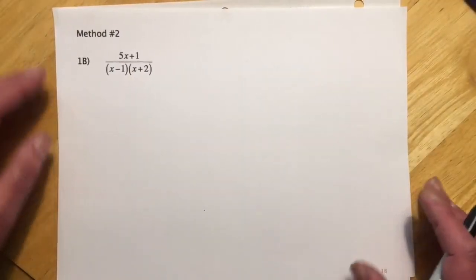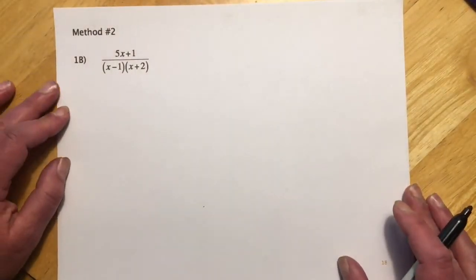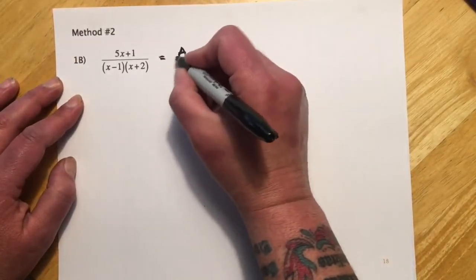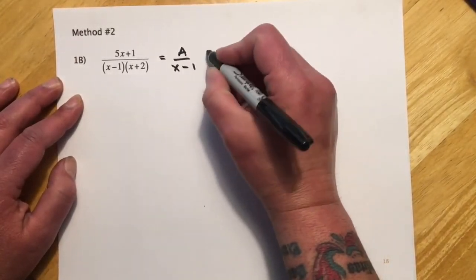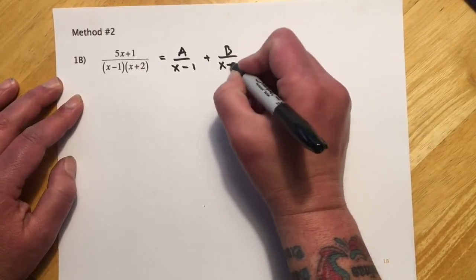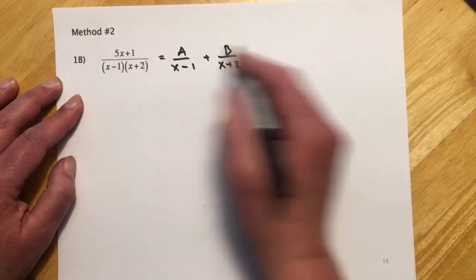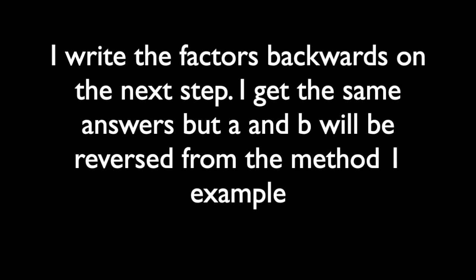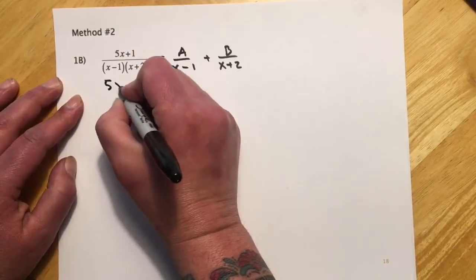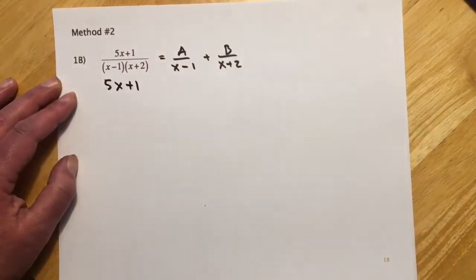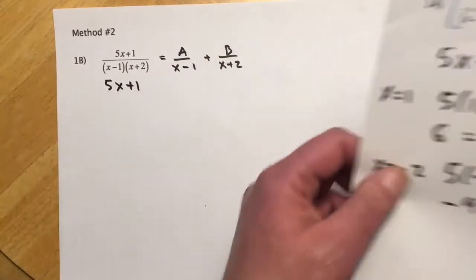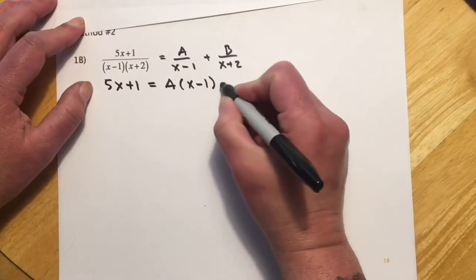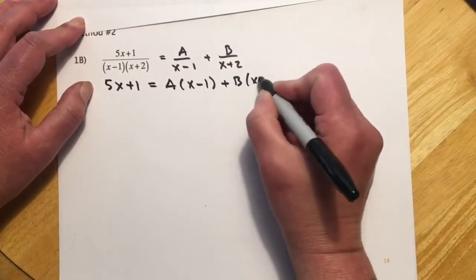So method 2 works better if you don't have any of the zeros, or not very many of the zeros. And the first step is the same. So I would set this up exactly the same. A over x-1, and then plus B over x+2. And then I would clear the fractions the same way. And I'll just get that written out right up here. So 5x+1, I'm going to grab the, so this is A(x-1), and then B(x+2).